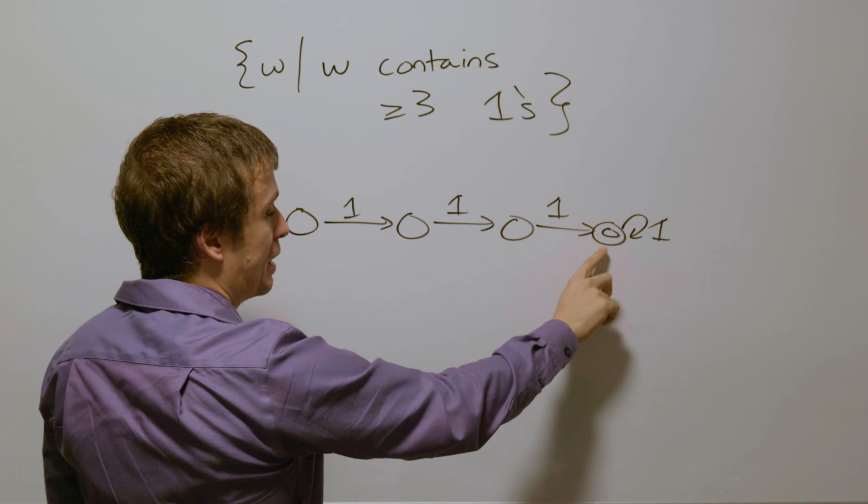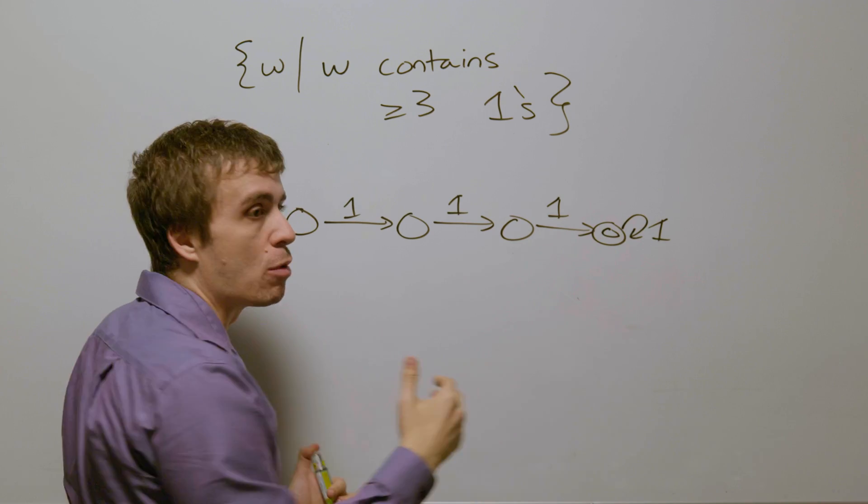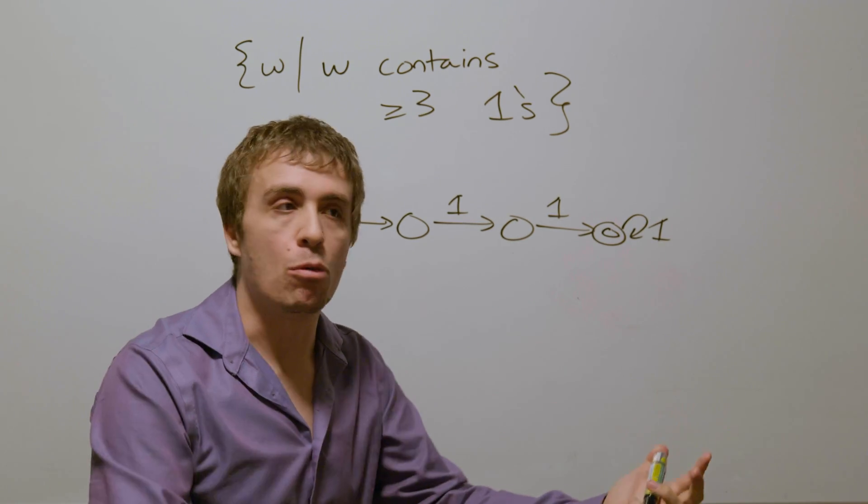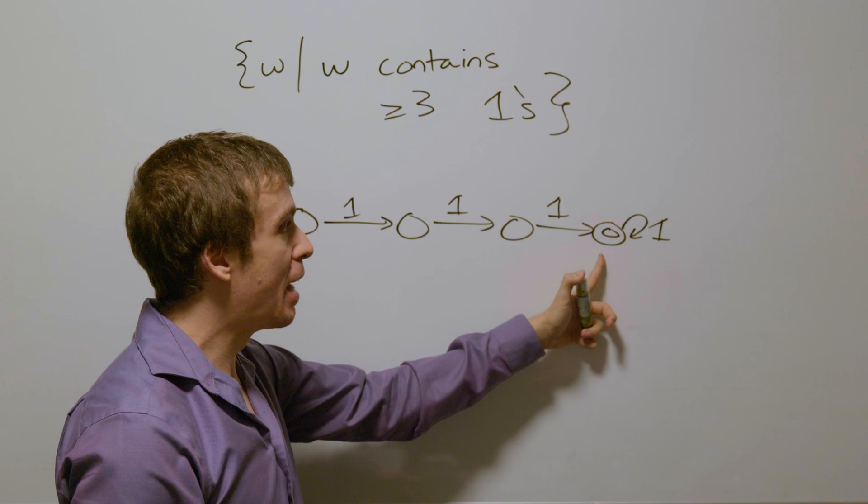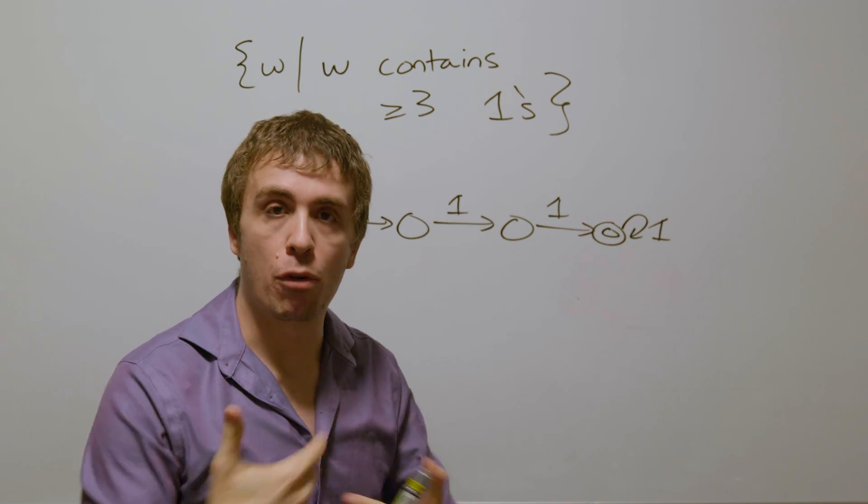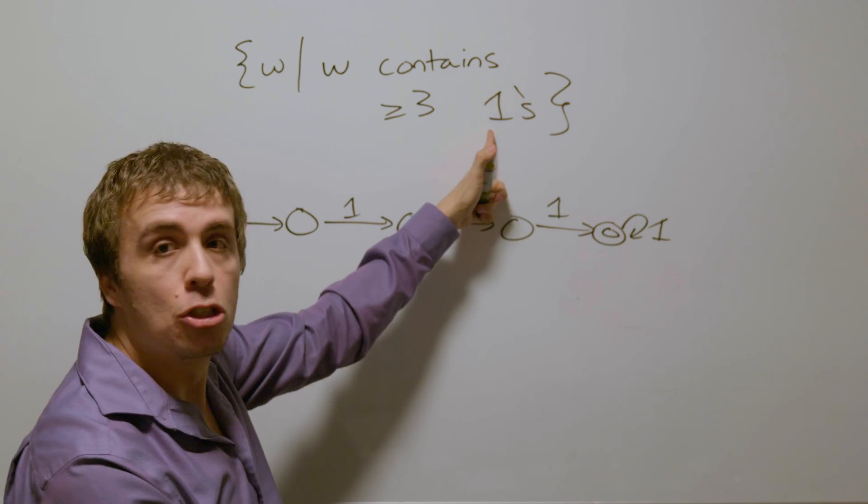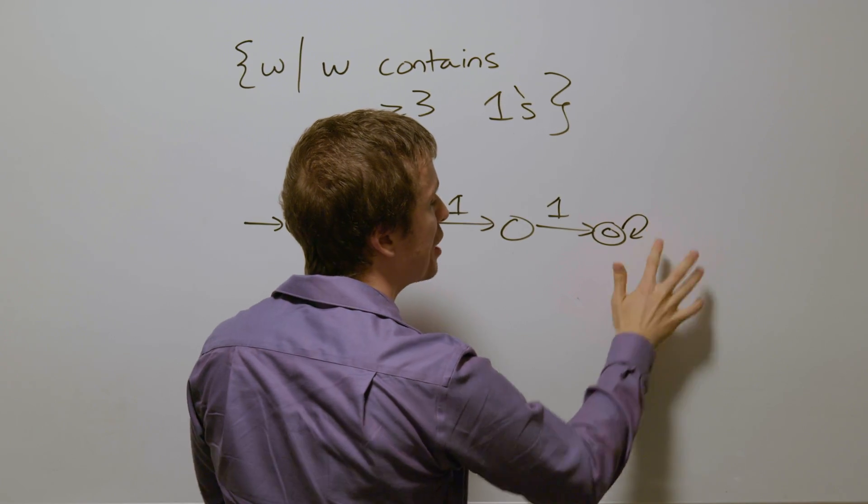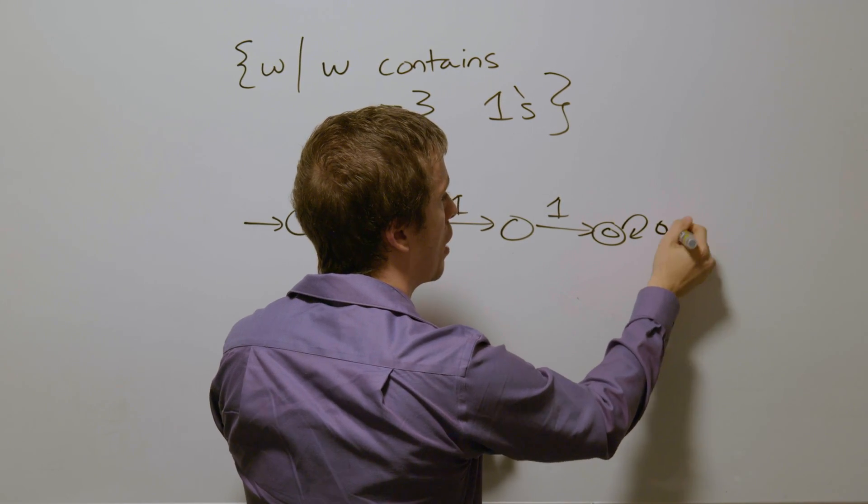Well, think about what this means. If we're at this state and we read a zero, we have already read at least three ones—in fact, three if we took that transition. And so therefore, if we read a zero, that doesn't change this requirement, and so we can amend this to be zero comma one.